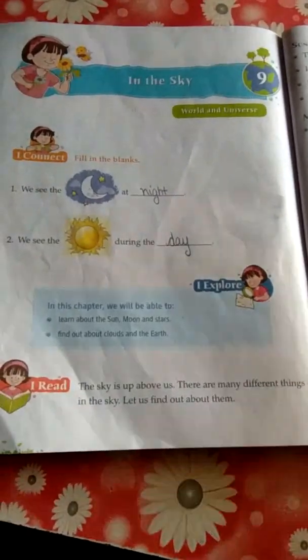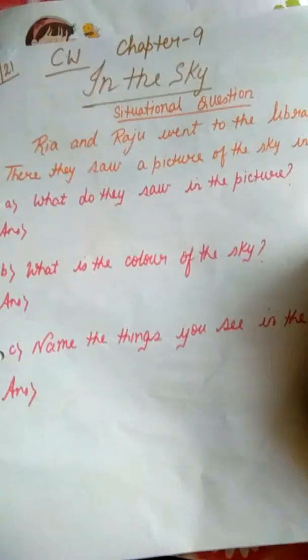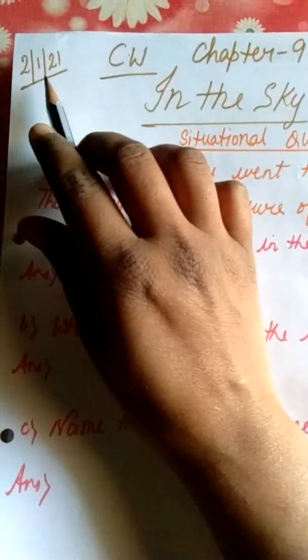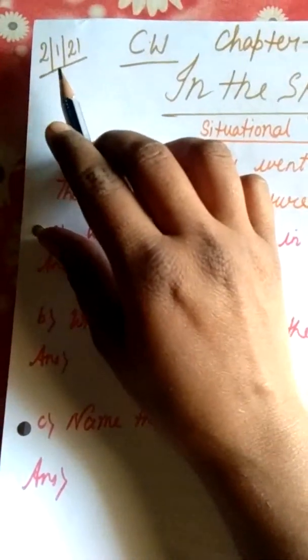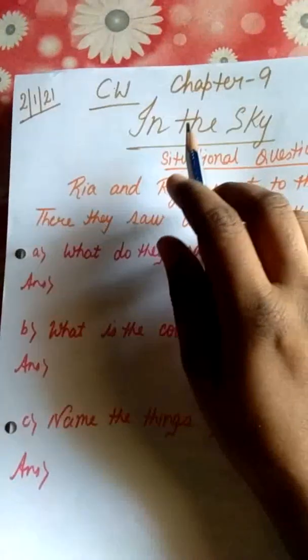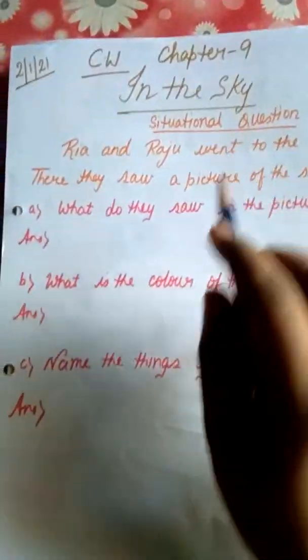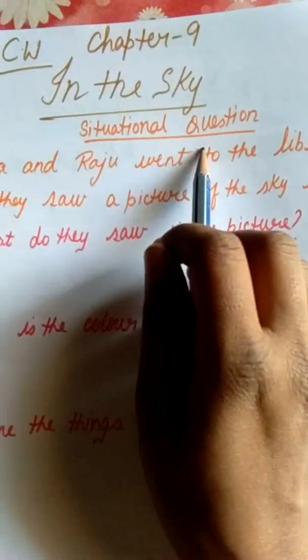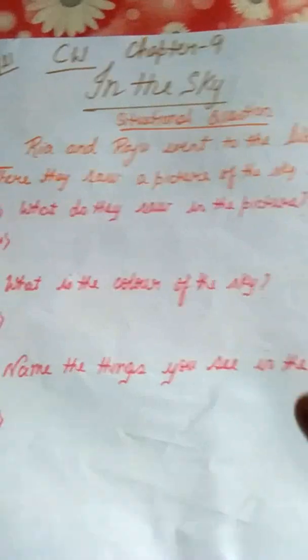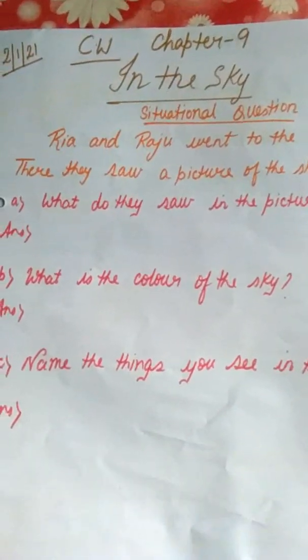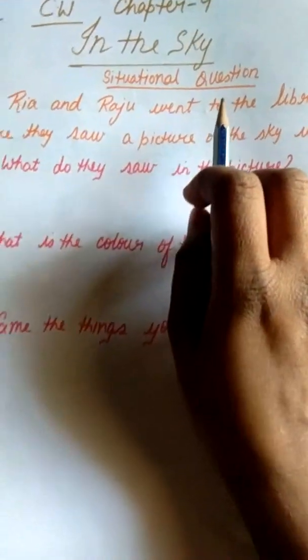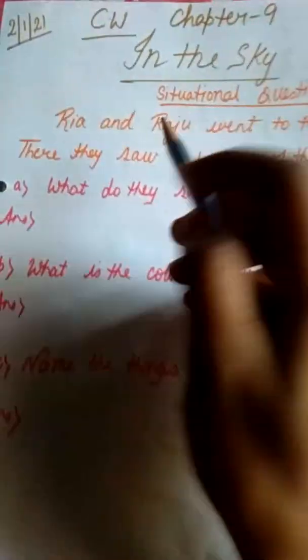Everyone come on, take out your EVS classwork copy and we will also do the classwork. So children, it's classwork time. Write today's date — it will be 2-1-21. The year has been changed from 20 to 21. So classwork: write today's date, classwork, chapter number 9, 'In the Sky.' It's a situational question — a situation is given and in that situation, what can you do? You have to find the correct answer.